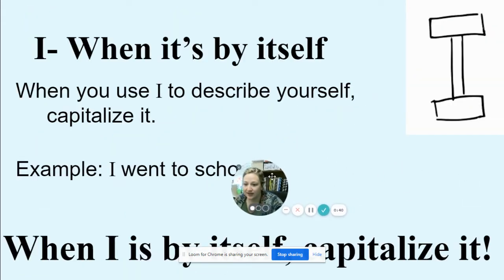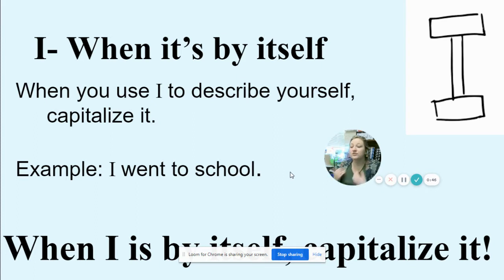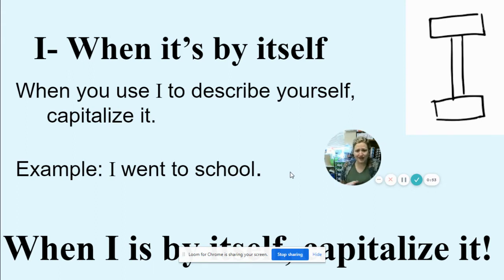I — when it's by itself, we use I to describe yourself, so capitalize it. For example: I went to school. When I is by itself, make sure it's a capital. Think of it like an adult — it lives by itself, so it has to stand tall as a capital.